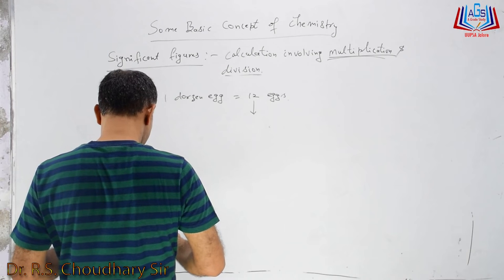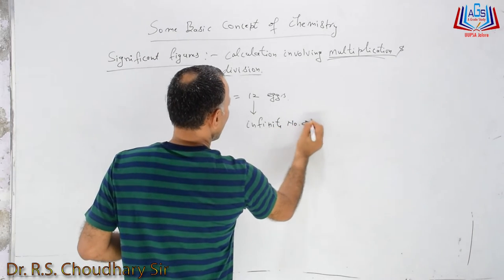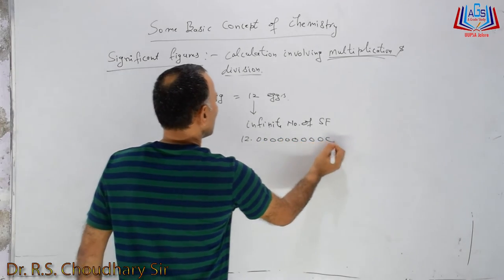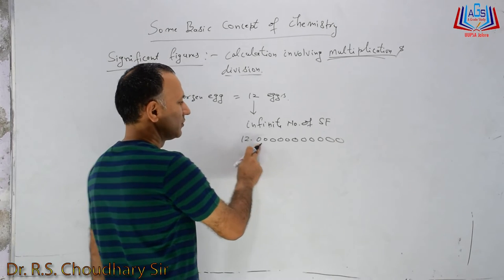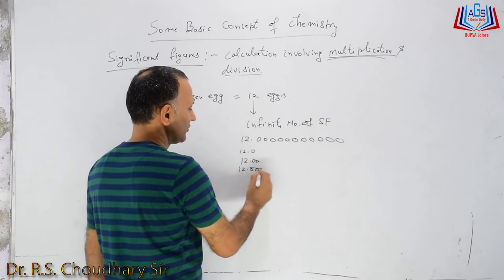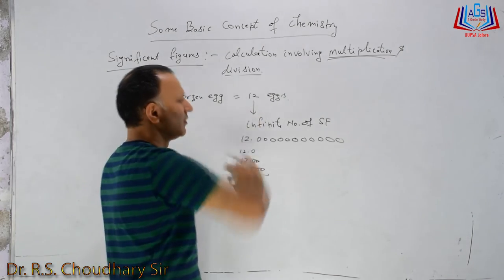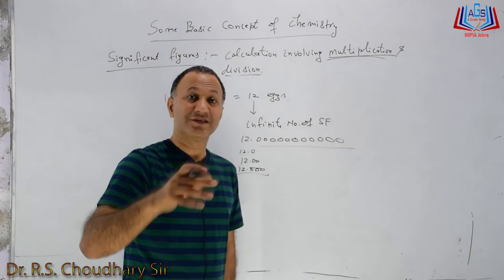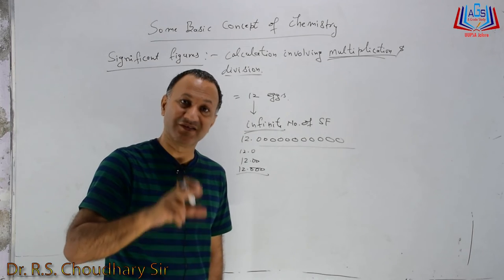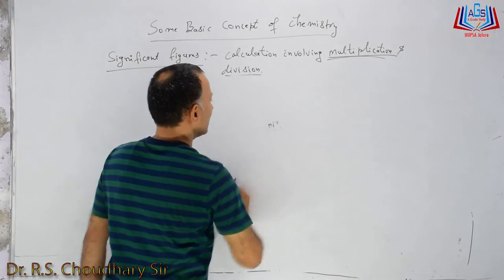We can write 12 as 12.0 (3 significant figures), 12.00 (4 significant figures), 12.000 (5 significant figures) — you can keep adding zeros. So if the value is exact, there are infinite numbers of significant figures. You have to remember: exact values always have infinite significant figures.